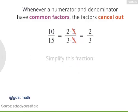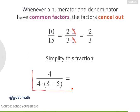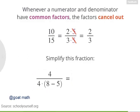So, try a final example. How can you simplify 4 over 4 times 8 minus 5? Enter a single whole number as your numerator and another whole number as your denominator.